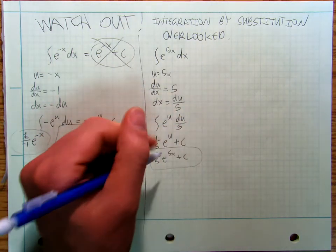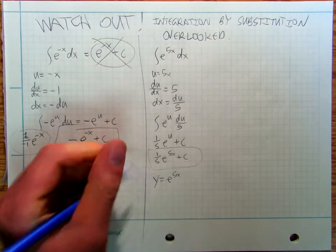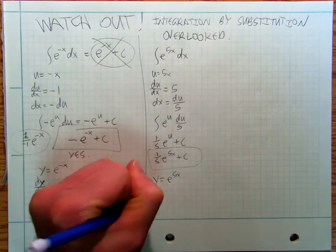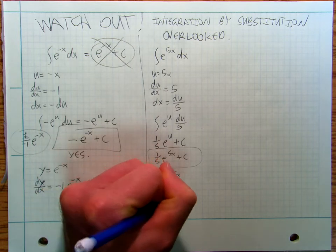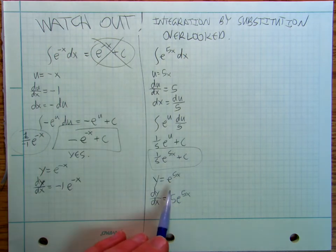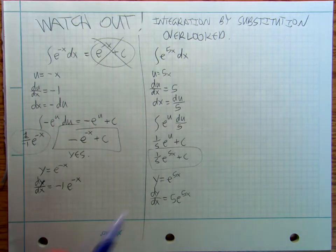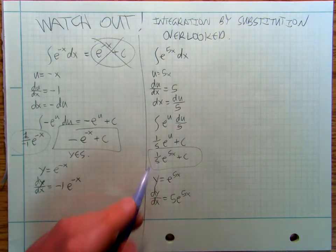Again, if y equals e to the 5x, then by my chain rule, when I take the derivative using chain rule, it brings a 5 out front. So, if I'm going to, in one second, if I take the anti-derivative, I'm going to bring a 1 fifth out front, right like that.